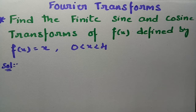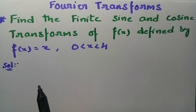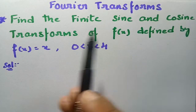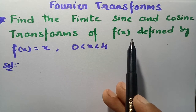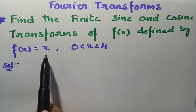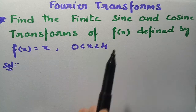Now let's get started to solve the problem on the screen from Fourier transforms. We have to find the finite sine and cosine transforms of the function f(x) defined by f(x) = x, where x lies between 0 to 4.